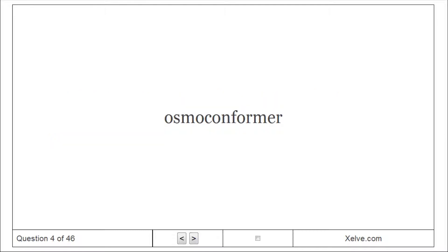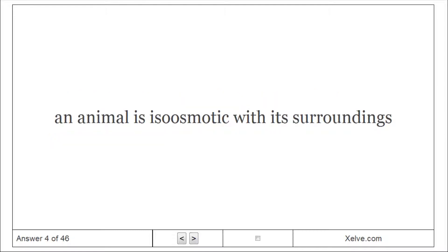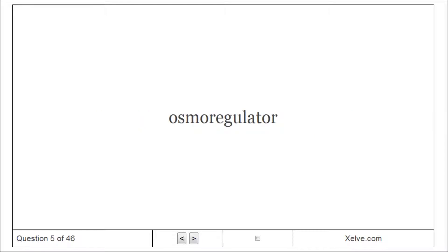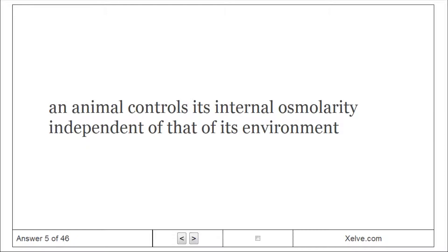Osmoconformer: An animal is isoosmotic with its surroundings. Osmoregulator: An animal controls its internal osmolarity independent of that of its environment.